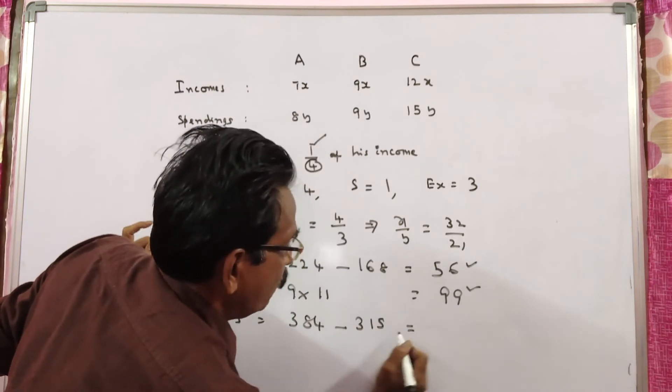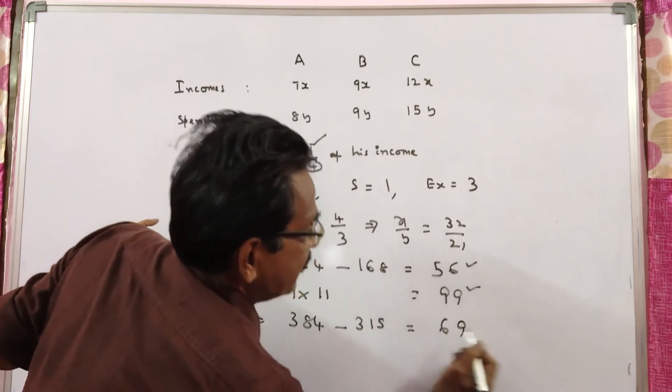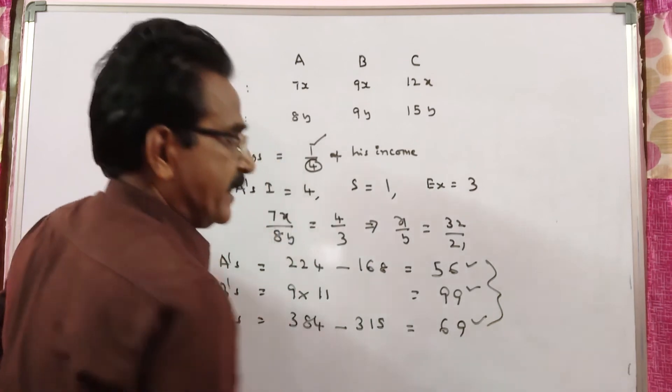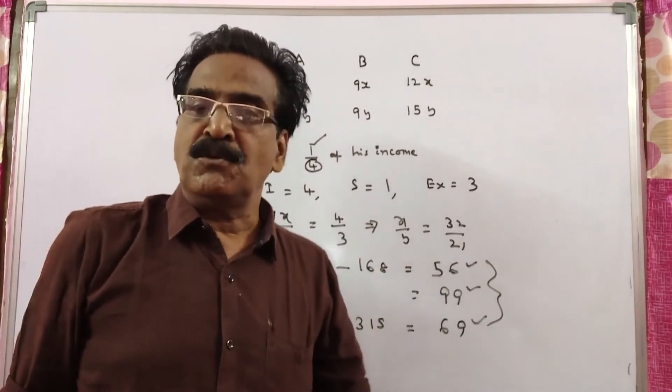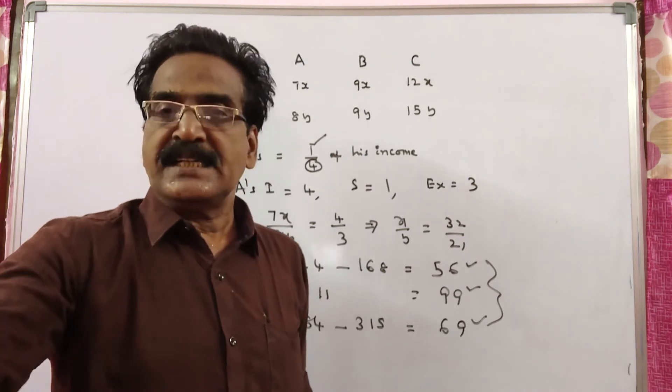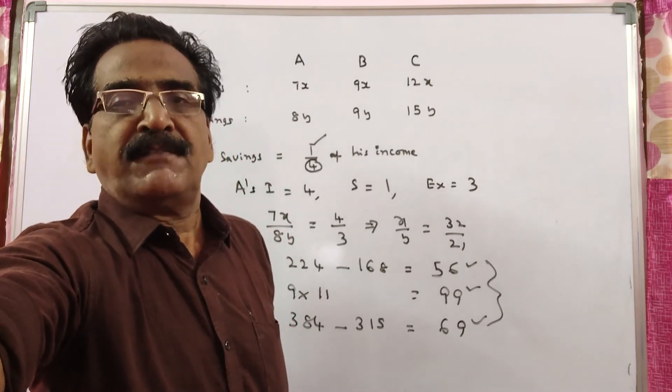This is equal to 69. So these are the savings of A, B, C. That is 56 is to 99 is to 69, friends. Thank you, have a nice day.